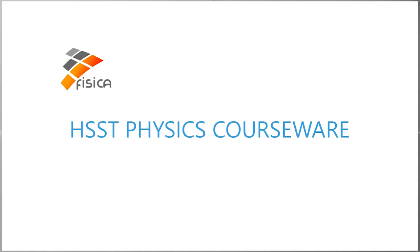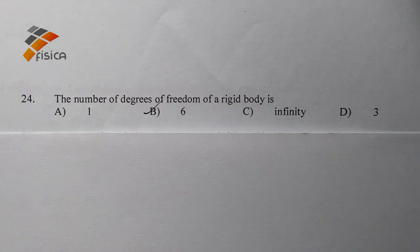Hello guys, today I discuss a model question for HSSD physics. The question is: the number of degrees of freedom of a rigid body is? The options are: A) 1, B) 6, C) infinity, and D) 3.